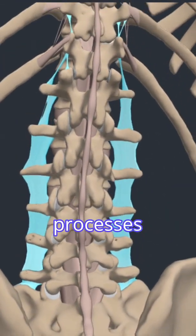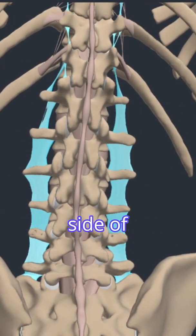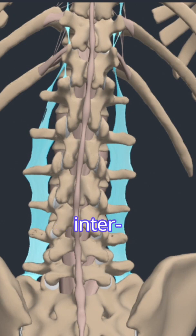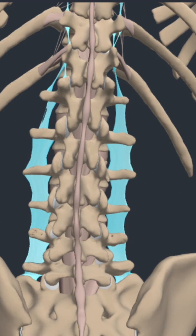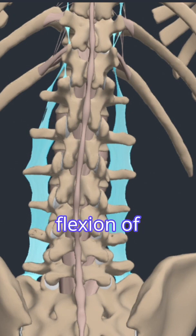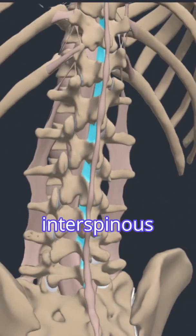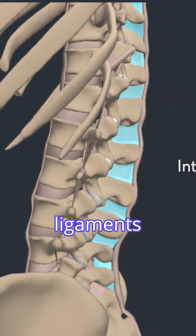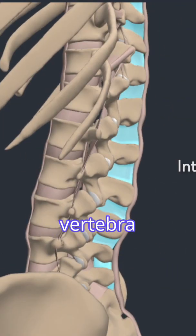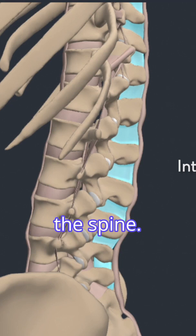Between the transverse processes on each side of each vertebra are the intertransverse ligaments, which limit lateral flexion of the spine. The interspinous ligaments connect the spinous processes of each vertebra and limit flexion of the spine.